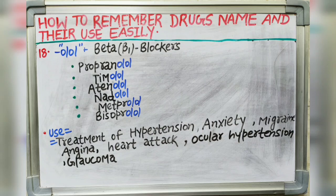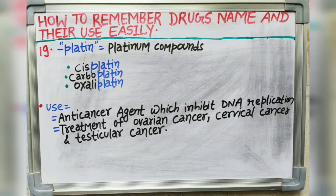Next suffix is -platin. Platin indicates platinum compounds. Drugs like cisplatin, carboplatin and oxaliplatin are used as anti-cancer agents; they inhibit DNA replication. They are used in treatment of ovarian cancer, cervical cancer and testicular cancer.